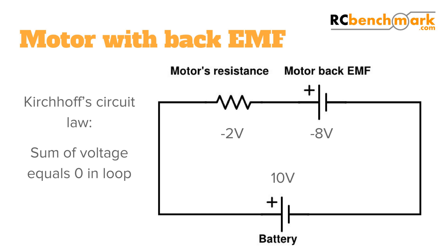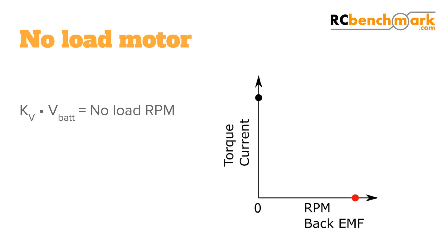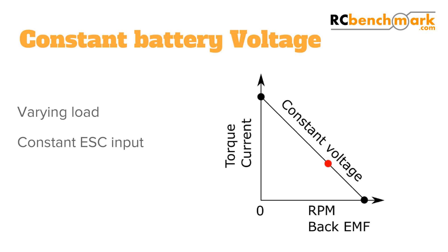Since the voltage drop at the resistor is smaller at higher speed, the current in the circuit is smaller, and the torque is also smaller. What happens when the back EMF equals the battery voltage? There is no voltage drop at the resistor, so no current and no torque. This is the no-load condition — it happens if you run your motor at full throttle with nothing on it. On the torque-speed diagram, this condition happens here on the graph. If we are in between the no-load and stall condition, the point of operation is moving on a straight line.